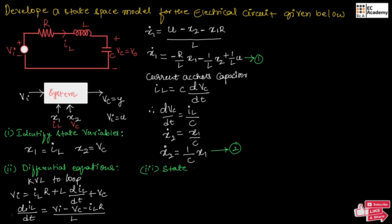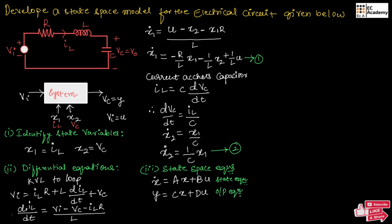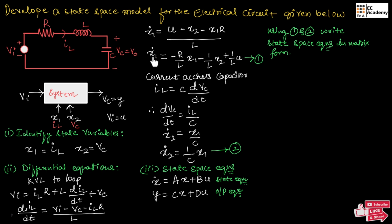Now we can write the state space equations. The state equation is given as X_dot = AX + BU, and the output equation is Y = CX + DU. Using equations 1 and 2, let us write these two equations in matrix form. From equation 1 we take X1_dot and from equation 2 we take X2_dot.